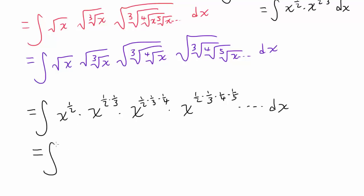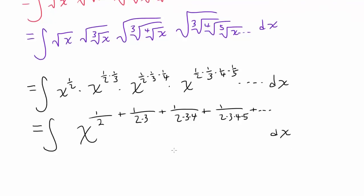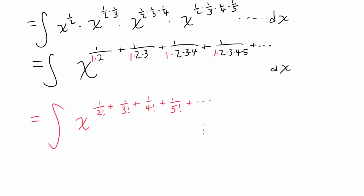So we have the integral of x to the power: 1 over 2, plus 1 over 2 times 3, plus 1 over 2 times 3 times 4, plus 1 over 2 times 3 times 4 times 5, and so on, dx. Writing this more explicitly with 1 times in front of each denominator, we can see factorials: x to the 1 over 2 factorial, plus 1 over 3 factorial, plus 1 over 4 factorial, plus 1 over 5 factorial, and so on, dx.